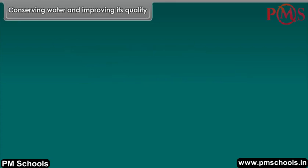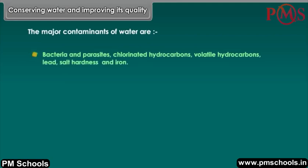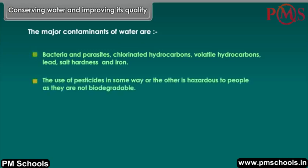Conserving water and improving its quality. The major contaminants of water are bacteria and parasites, chlorinated hydrocarbons, volatile hydrocarbons, lead, salt hardness, and iron. The use of pesticides is hazardous to people as they are not biodegradable.